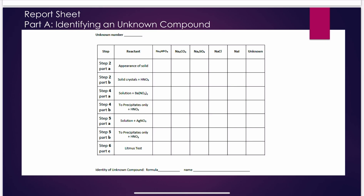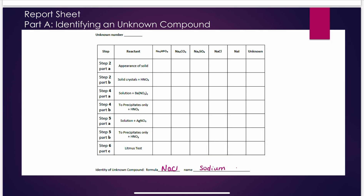This is what your report sheet will look like for the qualitative section — this is where you write the P, G, AQ, NR codes and identify your unknown. Please remember to write down both the formula and the name. For example, if you identify it as sodium chloride, write NaCl and write 'sodium chloride.' Both lines must be filled in because we are practicing naming. If you get confused, come see me. Your table should also be completely filled in for full credit.